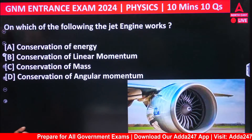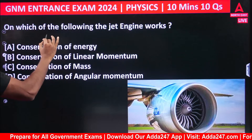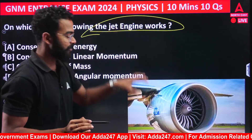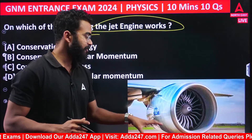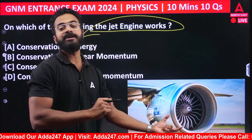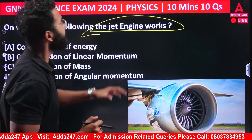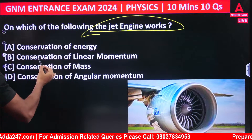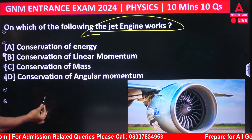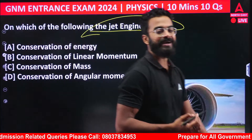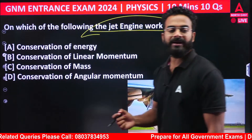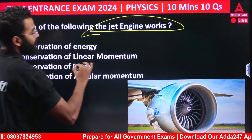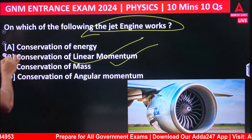Next question: which of the following does a jet engine work on? The options include conservation of energy, conservation of linear momentum, conservation of mass, and conservation of angular momentum. The correct answer is conservation of linear momentum — option B is correct.